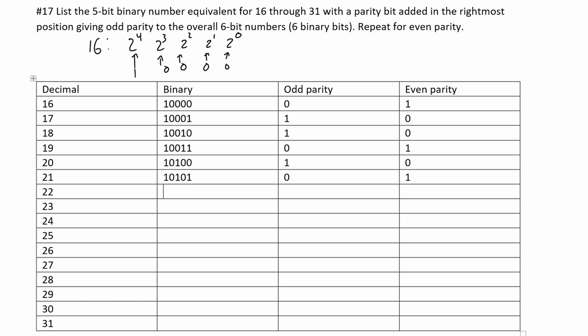For 22, it is just 21 plus 1, or we can say 20 plus 2. We'll take 20 (1 0 1 0 0), and if we add 2 to this, we are going to have a 1 in the 2 to the 1st position, giving 1 0 1 1 0. Since we have an odd number of ones, we're going to have a 0 for our odd parity and a 1 for our even parity.